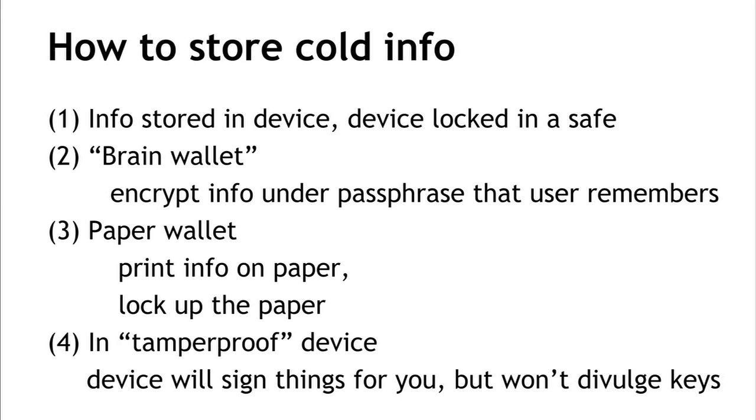The fourth way to store offline information is to put it in some kind of tamper-proof device that resists tampering. The device either receives the key or generates the key, and is designed so there's no way it will output or divulge the key. The device might sign a statement with the key when you press a button or give it a password, but it won't give out the key itself. The advantage is that if we lose the device or it's stolen, we'll know it — unlike the theft of key information where we might not know someone has learned our key. In general, people may use a combination of all four of these methods to secure their keys.